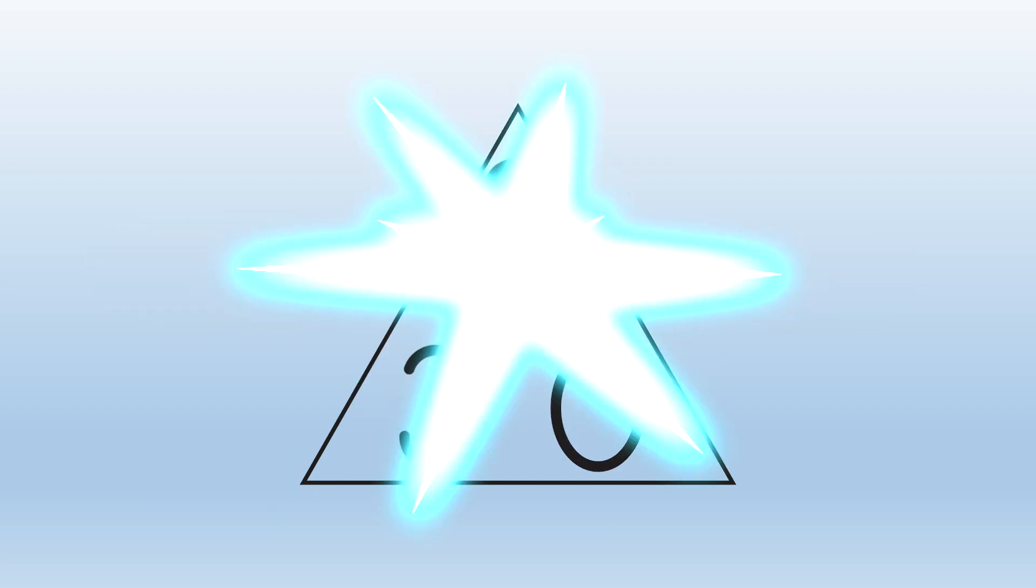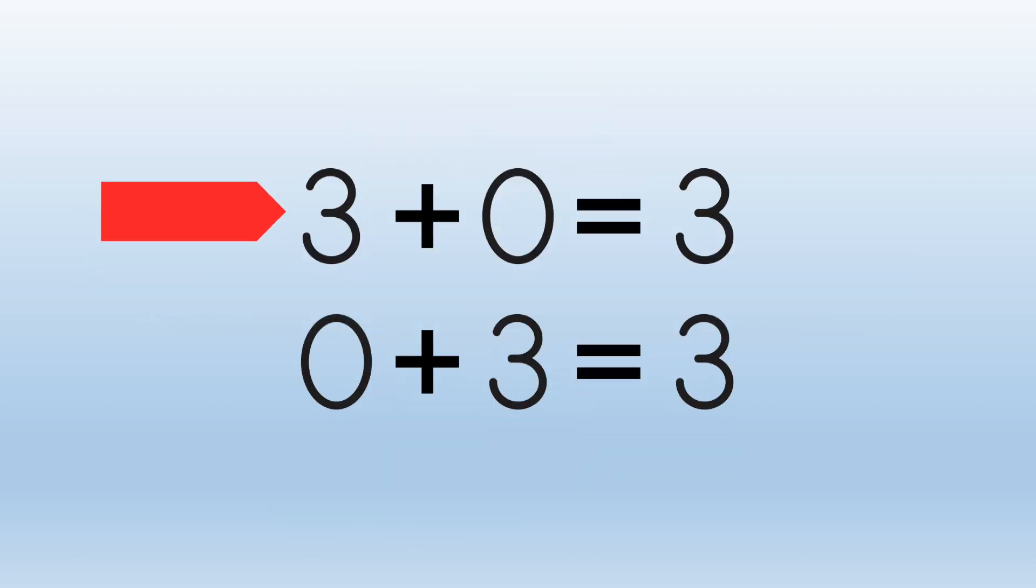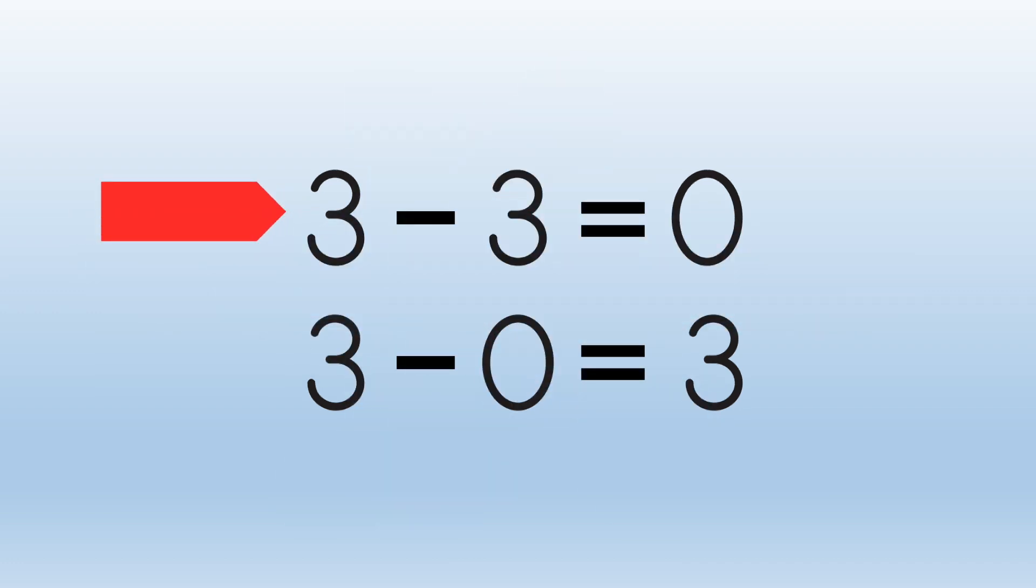With the family three, three, zero, we get four sentences. Three plus zero equals three. Zero plus three equals three. Three minus three equals zero. And three minus zero equals three.